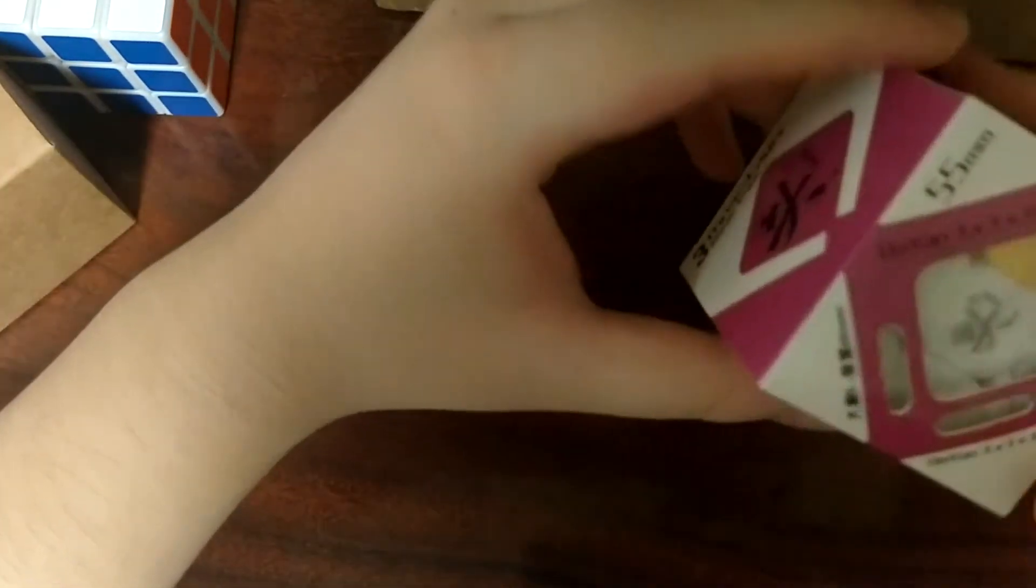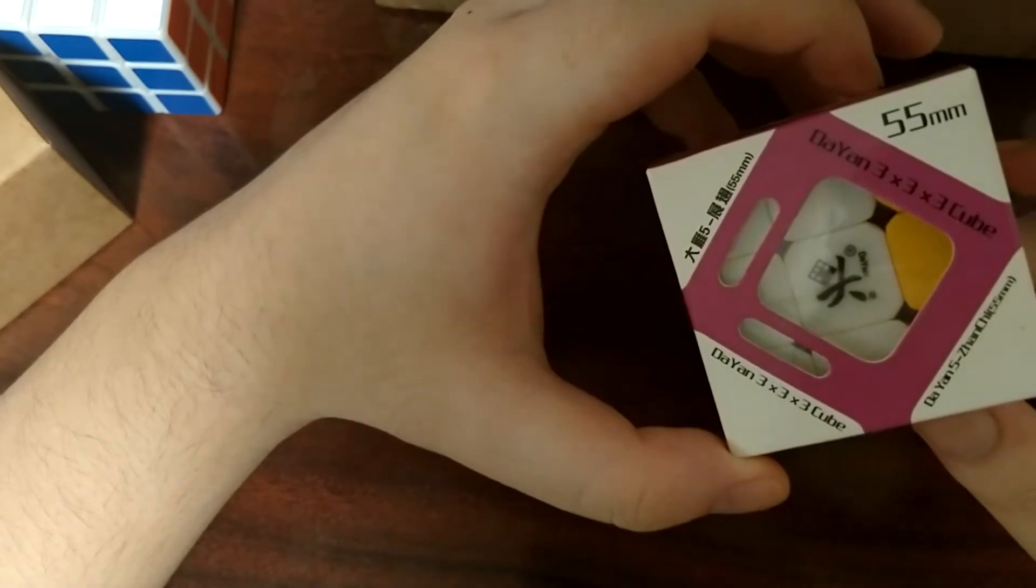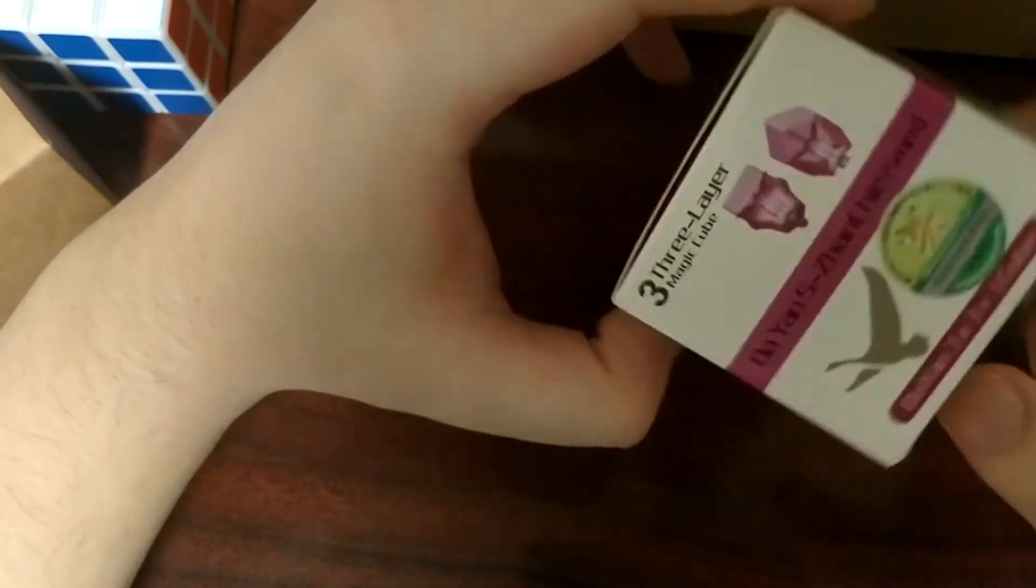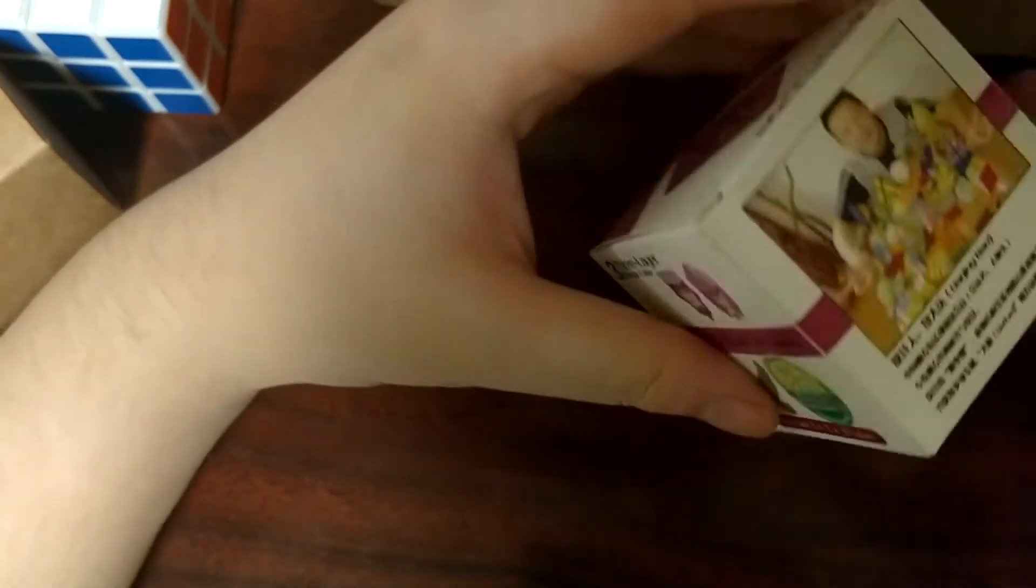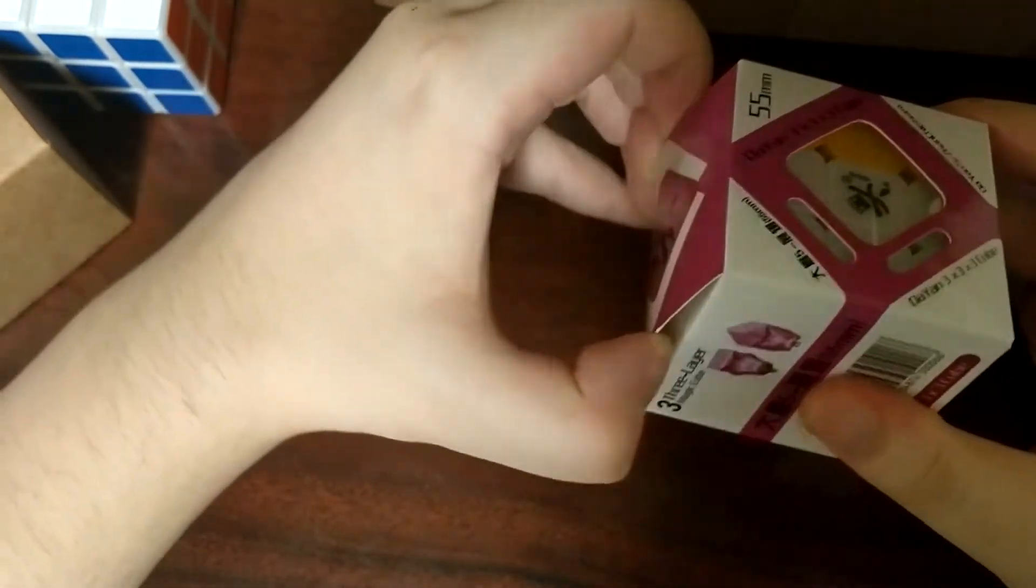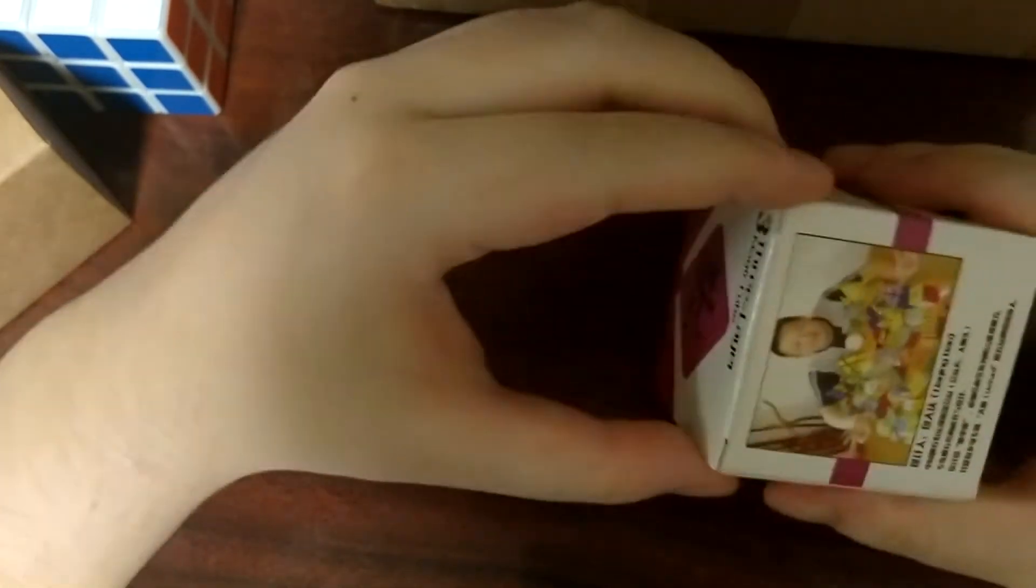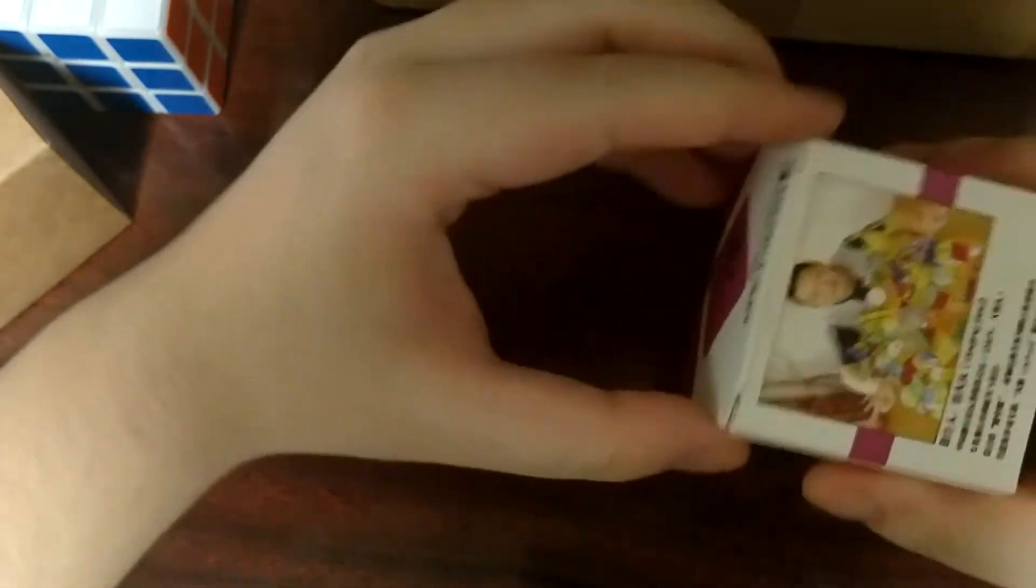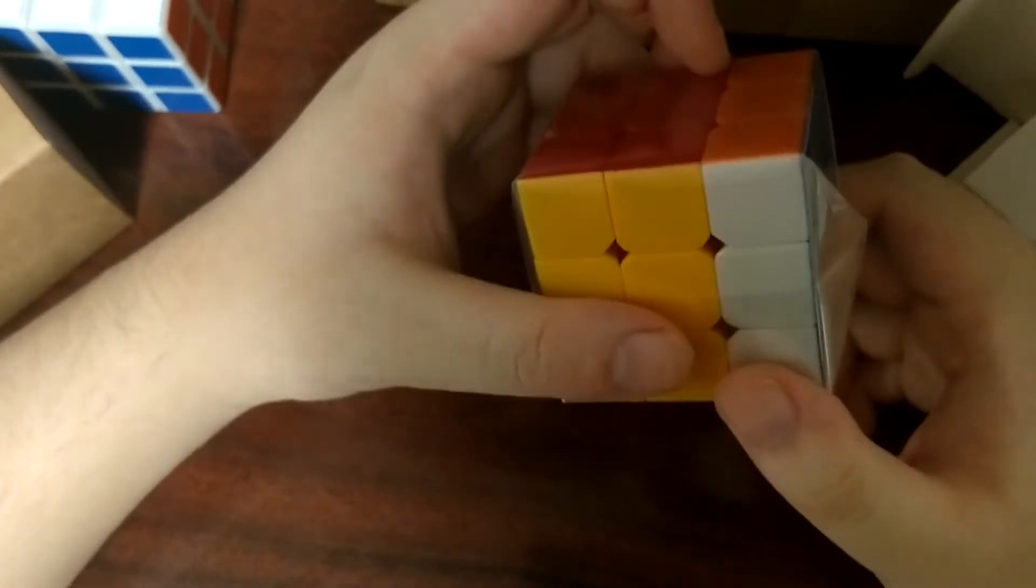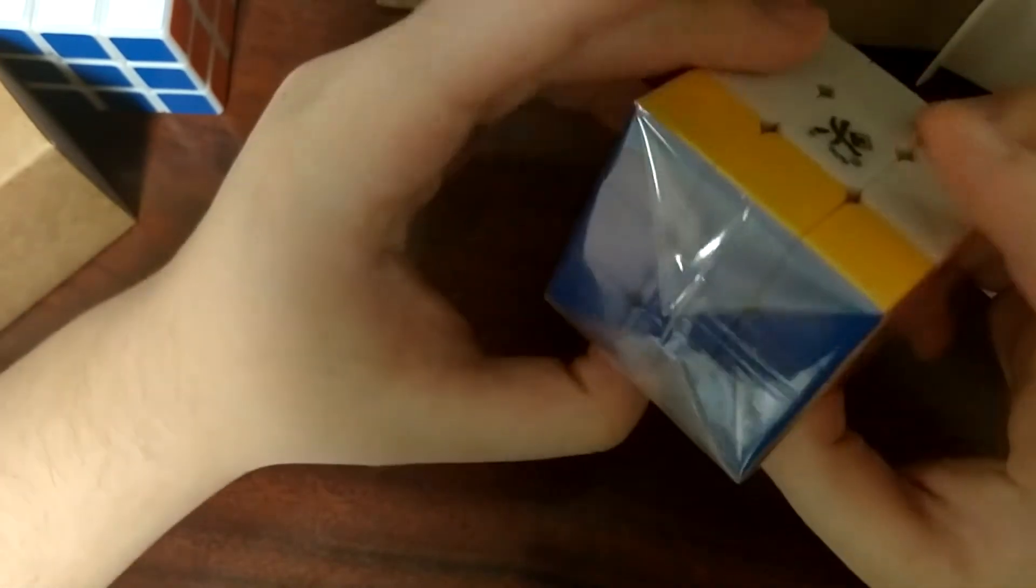Alright, so now let's check out the 55mm version. And the other version is 57mm, which is quite large by today's standard. Here we have a 55mm Mini-Zanchi. Let's try to get this box open without ruining it. Alright. That's pretty interesting. It came not fully solved with the U2 move over here.